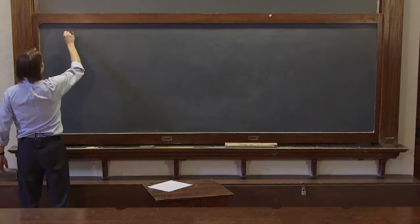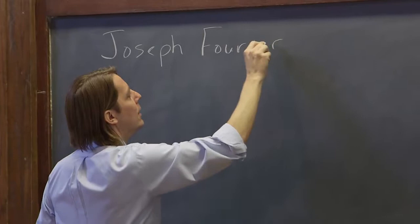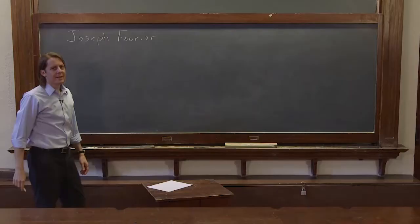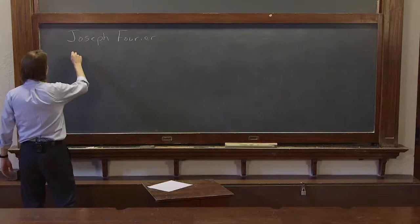There was a guy around 1800 named Joseph Fourier. He was a French polymath, and he had two crazy, wild ideas. One had to do with strings, so let's talk about that one first.